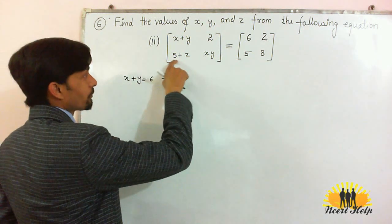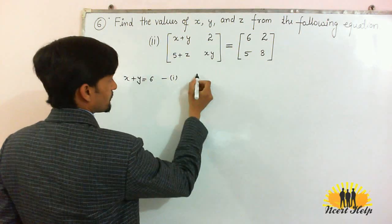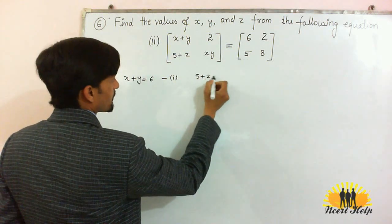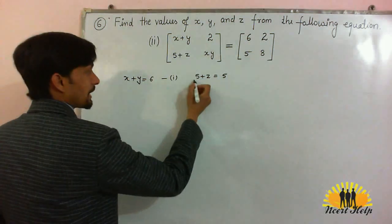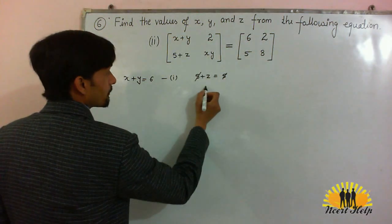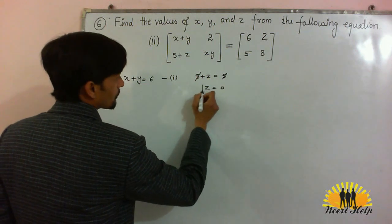Similarly, in place of 5 plus z, here it is 5. So 5 plus z is equal to 5, and here directly 5 cancels 5. We will get z is equal to 0.